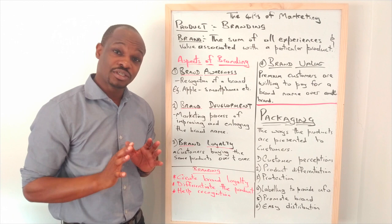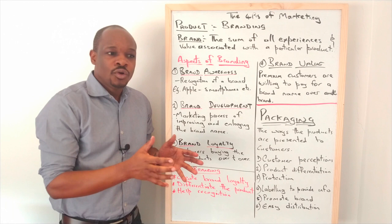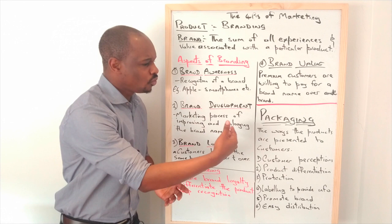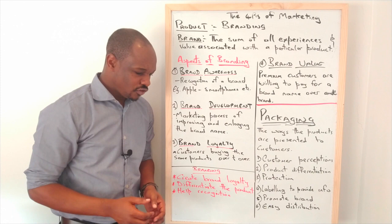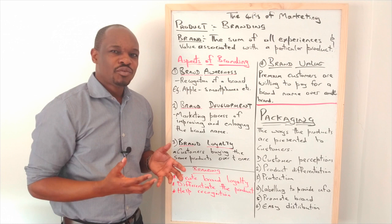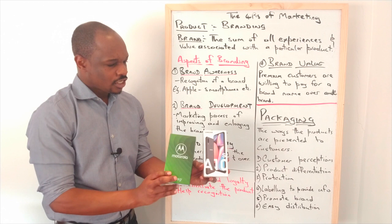Let's move on quickly to packaging. Packaging is also important because packaging is part of branding, part of the product, and part of positioning your product in a particular market so that people will know you and know the target market you're trying to attract. Packaging is the way the products are presented to customers. Imagine buying a phone and just receiving it in-hand without a box — that might not be a very good representation of the company. Here I have a Motorola and a Samsung phone. In packaging, you look at the color, the design, and the different colors.